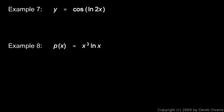In example 7, we're given the function y equals the cosine of the natural log of 2x, and we're told to find the derivative. We'll use the chain rule here.